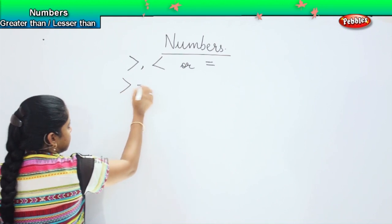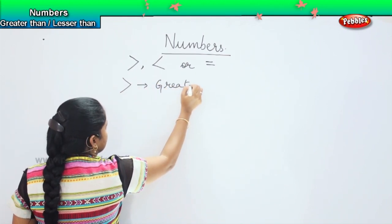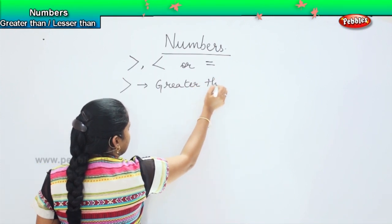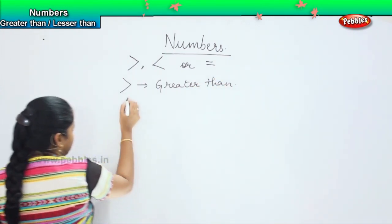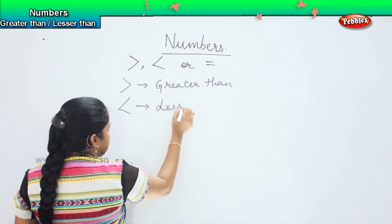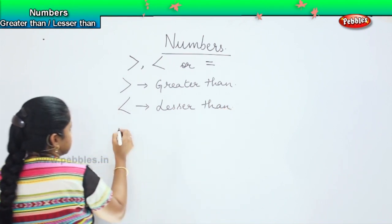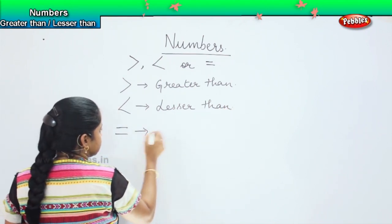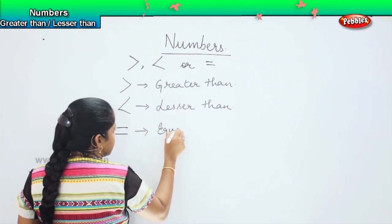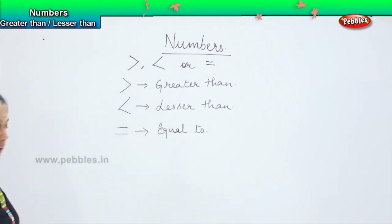Whenever you see a symbol like this, it means the value is greater than. If you see a symbol like this, it means the value is lesser than, and if you see a symbol like this, it means equal to.